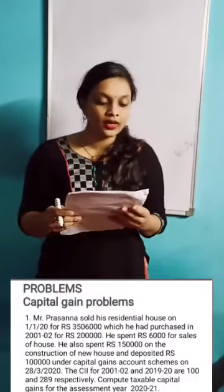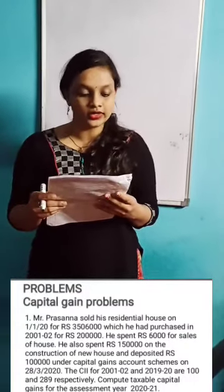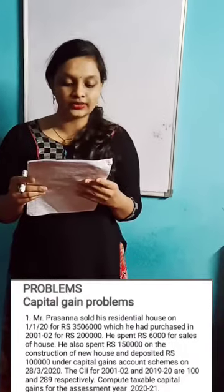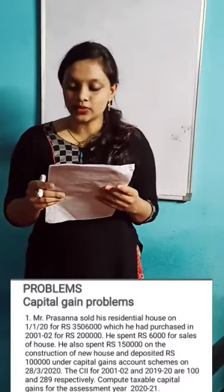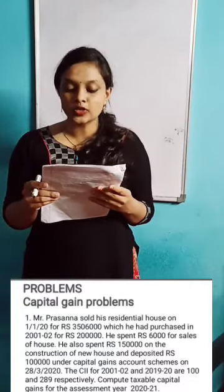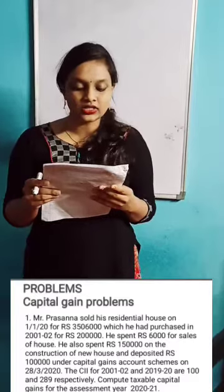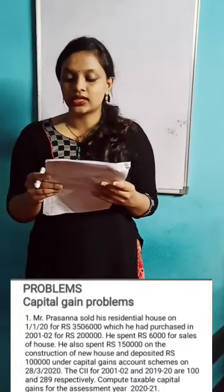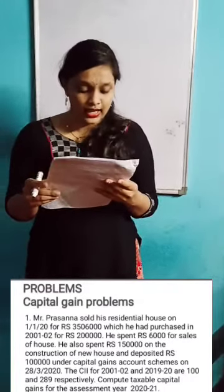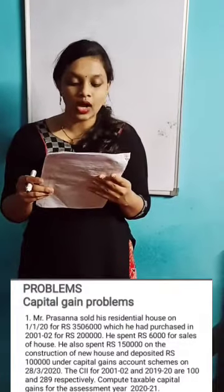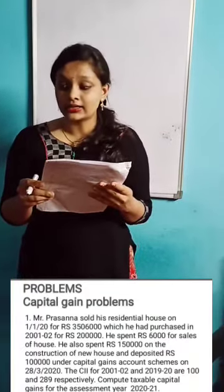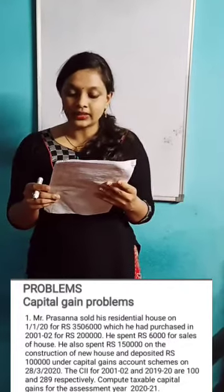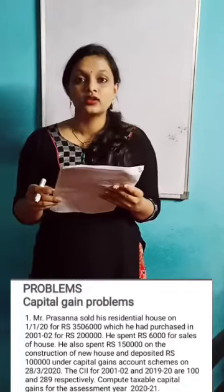Let's move to Problem 1. Mr. Prasanna sold his residential house on 1-1-2020 for Rs. 35,60,000, which he had purchased in 2001-02 for Rs. 2,00,000. He spent Rs. 6,000 for sale of the house, and also spent Rs. 1,50,000 on construction of a new house, and deposited Rs. 1,00,000 under capital gain account scheme on 28-3-2020. The CII for 2001-02 and 2019-20 are 100 and 289 respectively. Compute taxable capital gain for assessment year 2020-21.